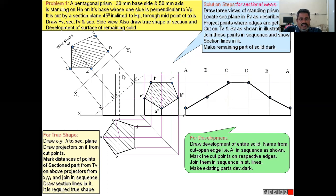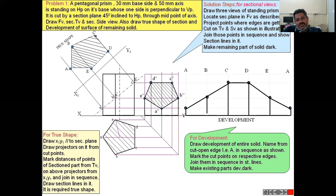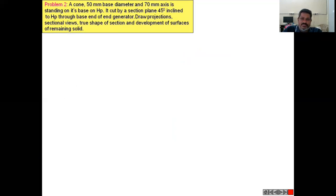Get the distances for B′E′ and C′D′, locate the points, and join all those points to get the developed surface of the pentagonal prism with the given conditions. Also draw the fold lines like this.